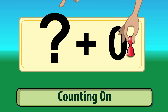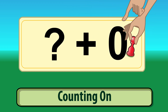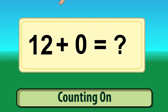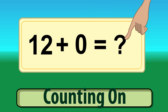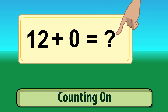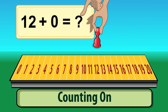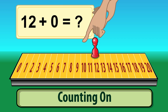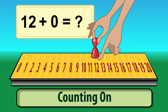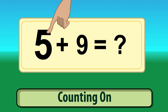Any number plus 0 remains the same number. 12 plus 0. Let's do it on the number line. Start with the larger number, 12. Move 0 places to the right — stay where you are. 12 plus 0 equals 12.